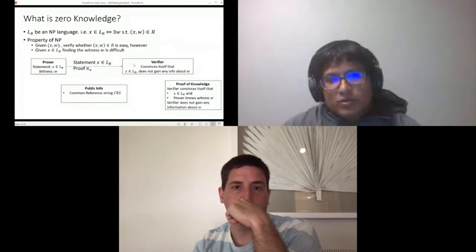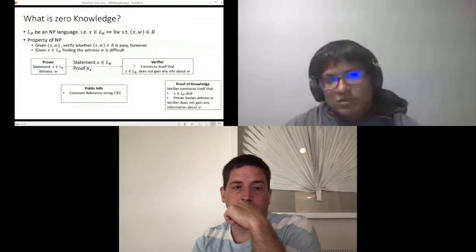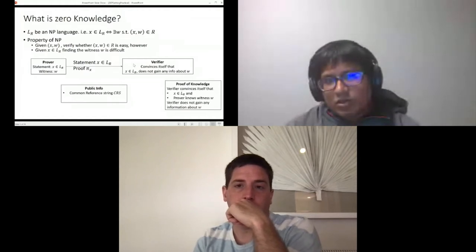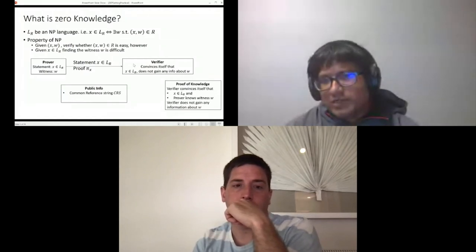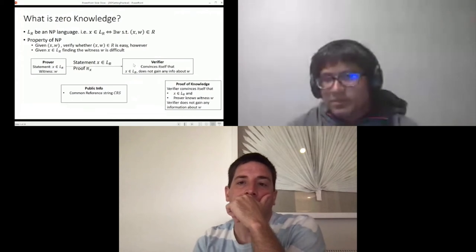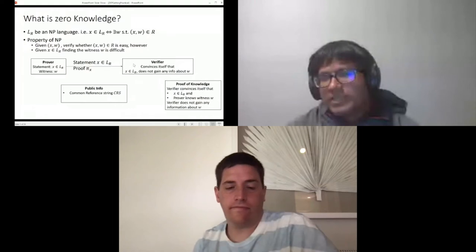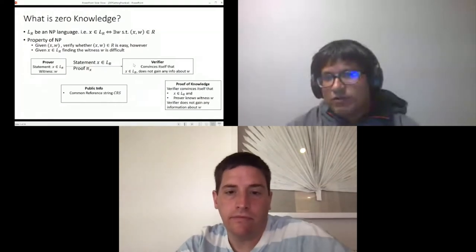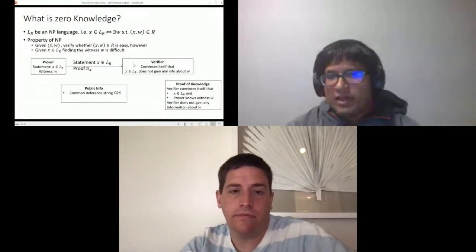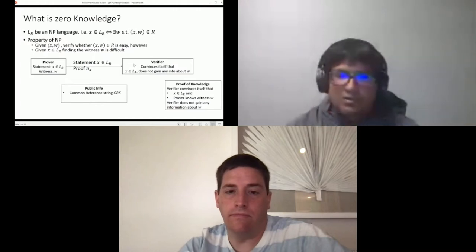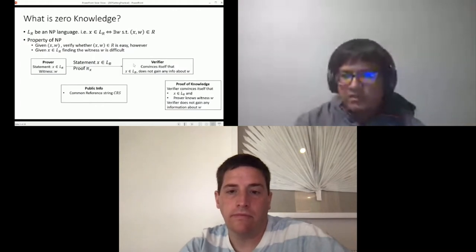There is also proof of knowledge that is important in many applications. In case of proof of knowledge, the verifier convinces itself that not only that x belongs to the relation, the prover also knows the witness w. And again as usual, the verifier does not get any information about w.